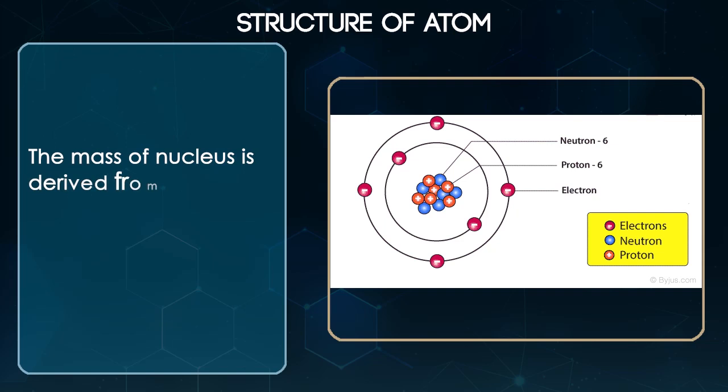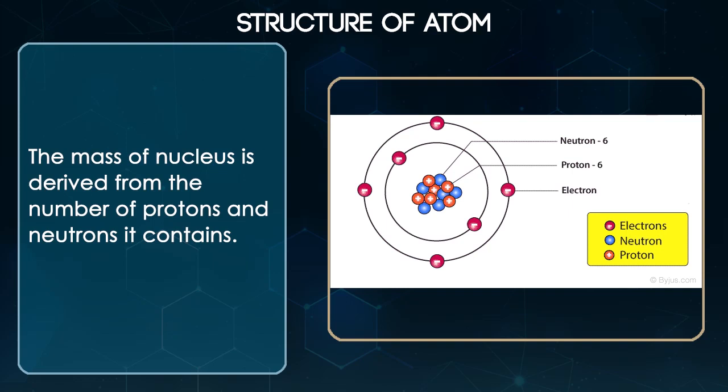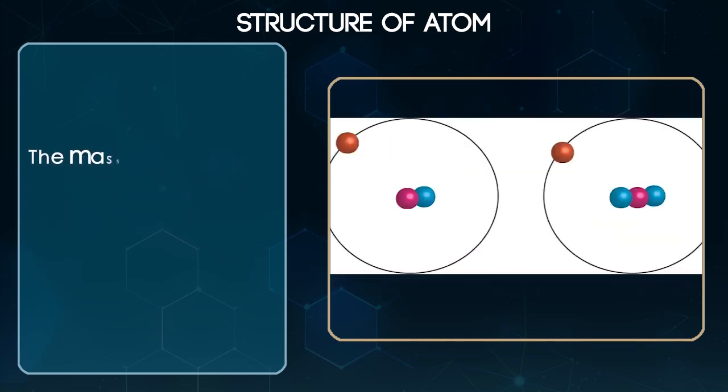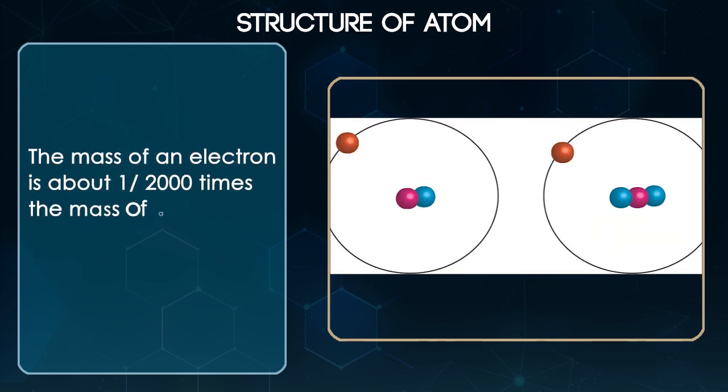The mass of the nucleus is derived from the number of protons and neutrons it contains. The mass of proton and a neutron is taken as 1 unit each. The mass of electron is about 1 by 2000 times the mass of a hydrogen atom.